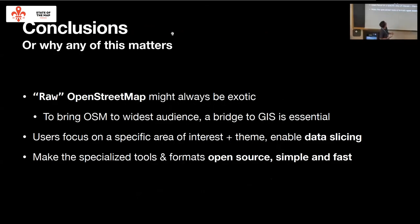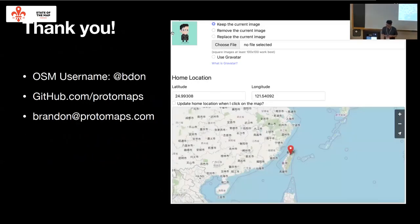So the conclusions — why any of this matters. Raw OpenStreetMap data models might always be quite exotic and a little inaccessible to the audience that can make the most use of it. To bring OSM to the widest possible audience and get the most value across diverse use cases, some sort of bridge between OSM and the GIS world of points, lines, and polygons is really essential. Focus on the data slicing task — whether that is slicing by area or slicing by theme — and if we can make that work and make it simple, fast, and open source, that's the ideal. You can find me on OpenStreetMap, on GitHub, and I'm always happy to collaborate.